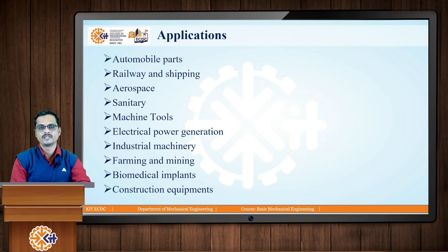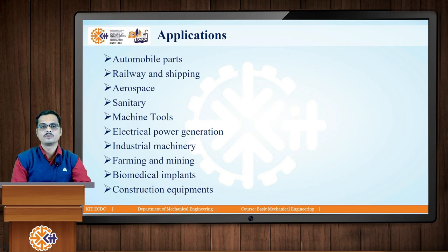We can also find applications in railways and shipping, aerospace, and sanitary applications. Machine tool applications include lathe beds, lathe structures, machine tool structures, and levers, all manufactured by casting. Electrical and power generation applications include casings of electric motors and housings of wind turbines. Industrial machinery applications include different types of hydraulic pumps — their casings and impellers are manufactured by casting. Farming and mining equipment are also manufactured by casting.